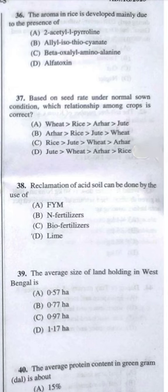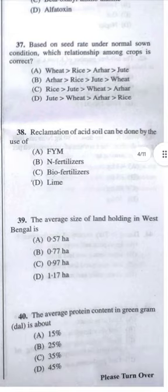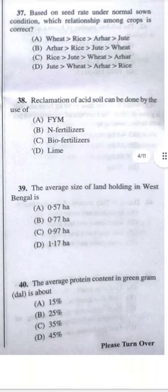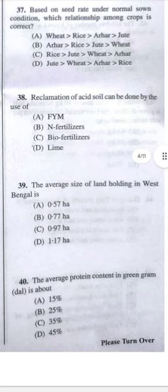Question 38: Reclamation of acidic soil can be done by the use of — answer A, lime. Question 39: The average size of land holding in West Bengal is 1.17 hectare — answer D, but please cross-check this.